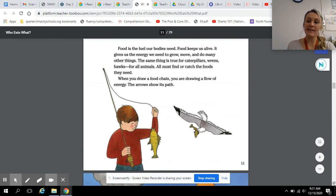Food is the fuel our bodies need. Food keeps us alive. It gives us energy we need to grow, move, and do many other things. The same thing is true for caterpillars, wrens, hawks, for all animals. All must find or catch the foods they need. When you draw a food chain, you are drawing a flow of energy. The arrow shows its path. There are many, many food chains. More than anyone could count.